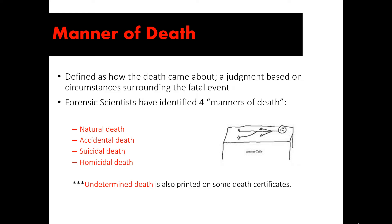Suicide is the deliberate taking of one's own life, due to a number of different factors. Homicide is the taking of one human life by another human being, and oftentimes this is premeditated — we'll get into that term in a future lesson. If natural, accidental, suicide, or homicide can't be determined by an investigator, pathologist, coroner, or medical examiner, then undetermined is the classification for the manner of death.